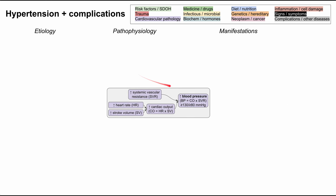Let's begin with the definition of blood pressure and how we derive that definition, which explains the pathophysiology. Blood pressure can be defined as cardiac output times systemic vascular resistance. There are a few definitions depending on the guidelines you follow, but the one most commonly seen is a blood pressure above 130 systolic and/or above 80 diastolic, which is a pretty good definition for class 1 hypertension.